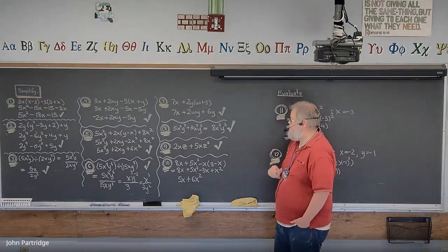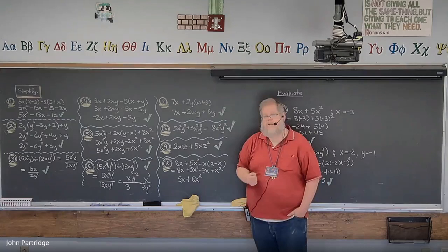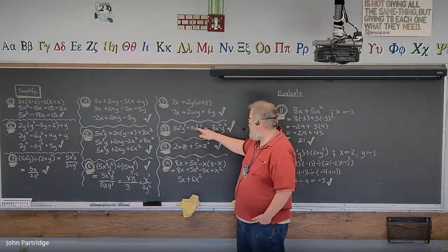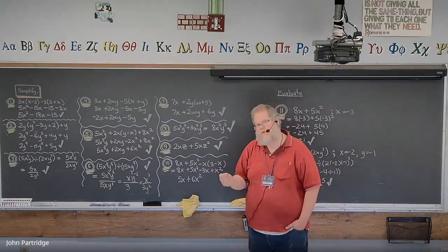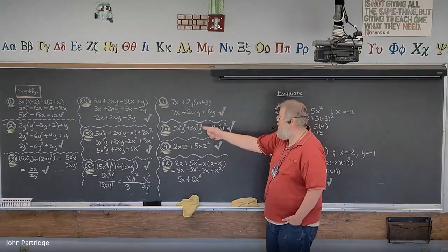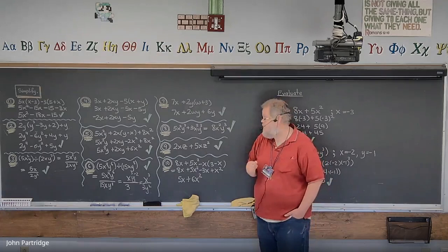Problem 8: 5x²y³ + 3x²y³. Are there like terms? Yes — x is squared in both cases and y is cubed in both cases. You need perfectly matching variables and perfectly matching powers, and that's exactly what we have. So 5 + 3 = 8. Final answer: 8x²y³.